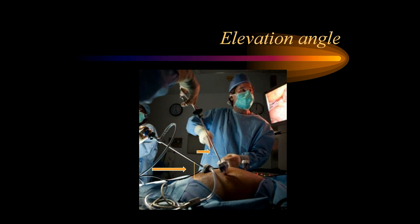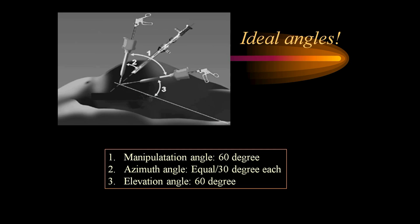The next important principle is the elevation angle. When we insert the trocar, if we are too close to the pathology it will go more vertically, making things difficult. If we are too far away, the angle becomes too acute. The ideal elevation angle is around 60 degrees, and the trocar should enter about 10 to 12 centimeters away from the area of interest to achieve that. The ideal three angles are: manipulation angle of 60 degrees, azimuth angle of equal 30 degrees each, and elevation angle of 60 degrees — three essential ergonomic principles.